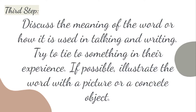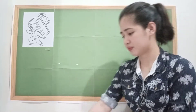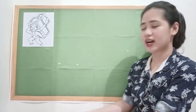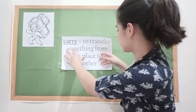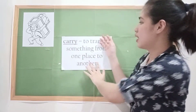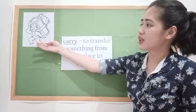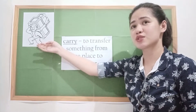Third step in correcting sight word knowledge deficit: discuss the meaning of the word or how it is used in talking and writing. Try to tie it to something in their experience. If possible, illustrate the word with a picture or a concrete object. Do you know what the word carry means based on the sentence? Vince responds: 'I think it means to pick something.' Yes, that's correct. Carry means to transfer something from one place to another. For instance, when you see a worker carrying boxes or when your mother asks you to help her carry groceries.